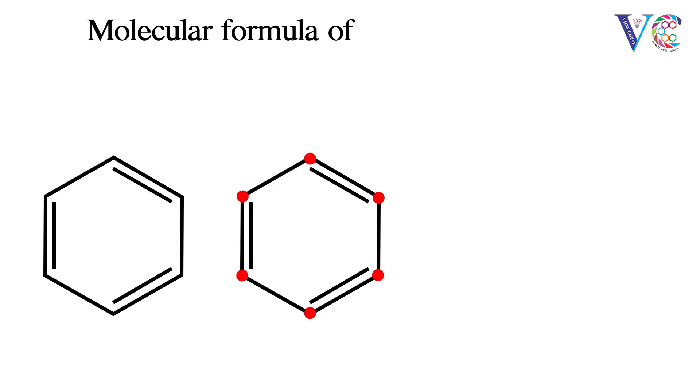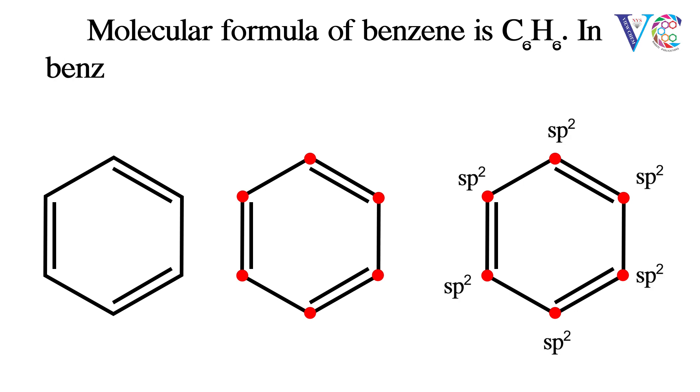Molecular orbitals of benzene. Molecular formula of benzene is C6H6. In benzene all the carbon atoms are sp2 hybridized.